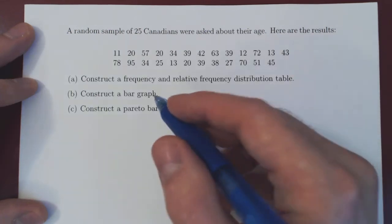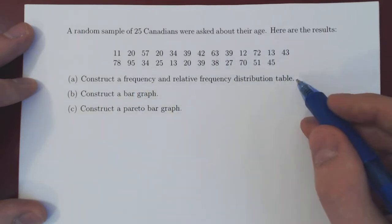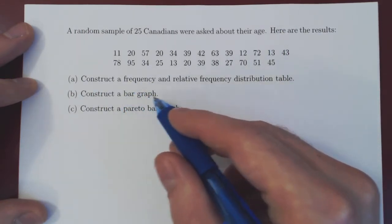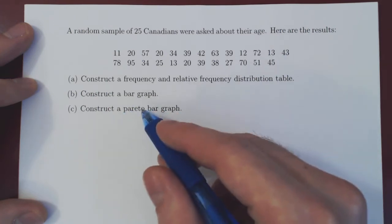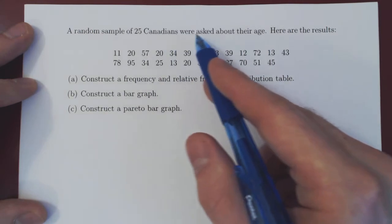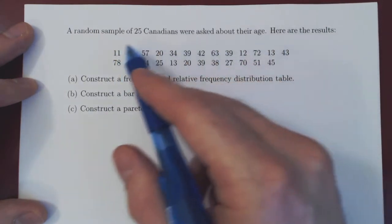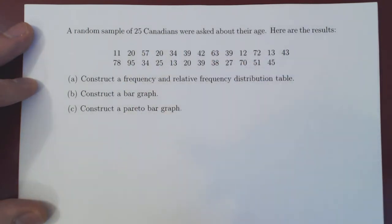Okay, so in this video, we will discuss the idea of a frequency and relative frequency distribution table, the idea of a bar graph, and the meaning of the word Pareto. So here's the setup. A random sample of 25 Canadians were asked about their age, and here are the following results. So 25 ages of Canadians.